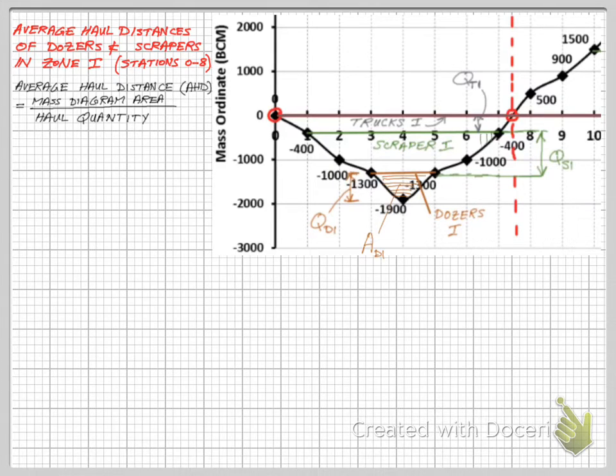We can visualize the mass diagram area of the scrapers and dozers as AS1 and AD1. So we can apply the formula to calculate the average haul distance AHD for the scrapers and dozers in the first zone.